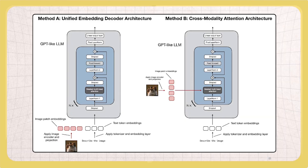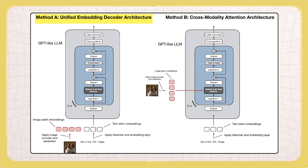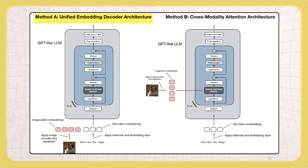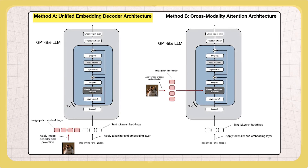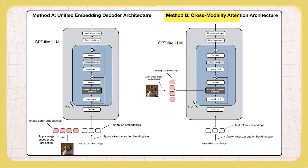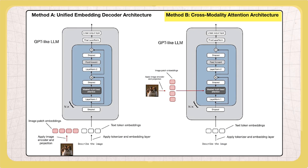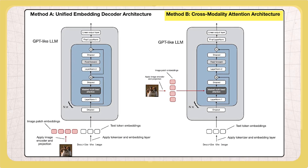I would say there are two main techniques. One is essentially just feeding the input images together with the input text as input to the LLM. And the other is at the multi-attention layer, which becomes the cross-attention layer.